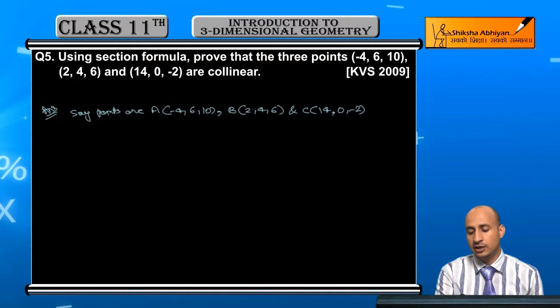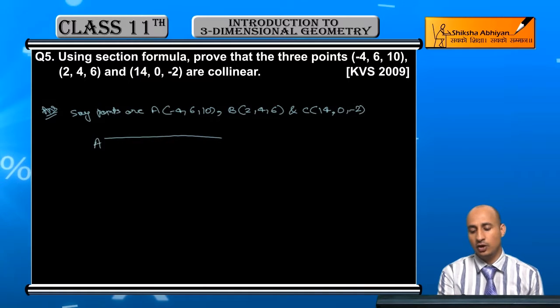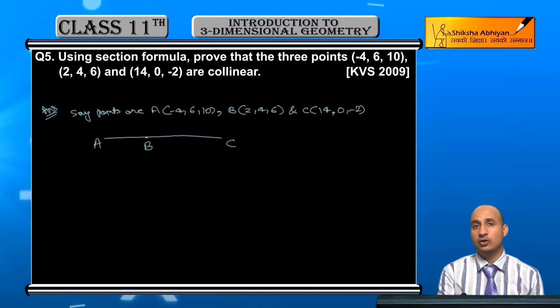If the points are collinear, there should be a line. And the line should be A and C and B. So B lies on AC and gives the same ratio.